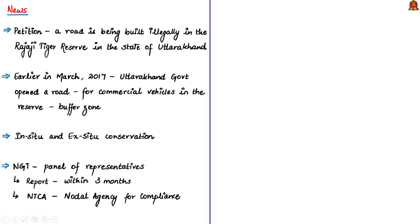A petition was filed before the National Green Tribunal about alleged illegal road construction in the Laldang-Chillarkhal buffer area of Rajaji Tiger Reserve. The National Green Tribunal is a statutory body established as per the provisions of the National Green Tribunal Act of 2010. It was stated that even after getting a closure order for the Laldang-Chillarkhal road from the District Forest Officer, the state government went ahead with the construction. The road was opened for commercial use in March 2017. The petitioner states the road construction has a severe negative effect on in-situ and ex-situ conservation in the Tiger Reserve and will potentially damage its biodiversity. The NGT formed a panel to investigate and submit a report within three months, with the National Tiger Conservation Authority as the nodal agency.